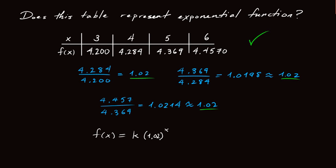So we have a formula now for our exponential function. And 1.02 is the growth factor. That's what we computed here. Now the only thing missing here is k. How do you compute k? Well, you have other videos explaining this, but let's go ahead and do it since we're here.